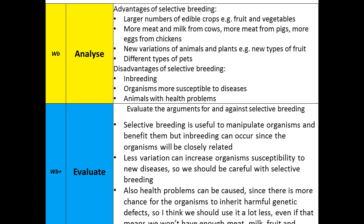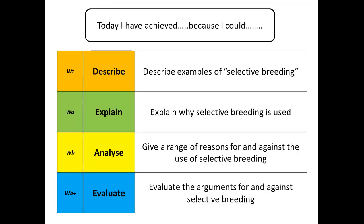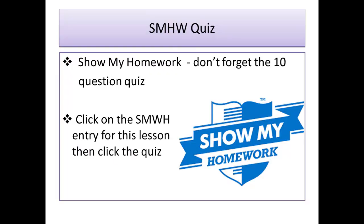For the last evaluation question, there is no single right or wrong answer — it's your own evaluation. For self-assessment today, remember to describe, explain, analyze, and evaluate for the first gap, and use the sentences to explain why you achieved what you achieved. What you've achieved is what you did on your own. Remember to do the 10-question quiz and show the homework related to this lesson. Thanks for today — well done, and see you next time.